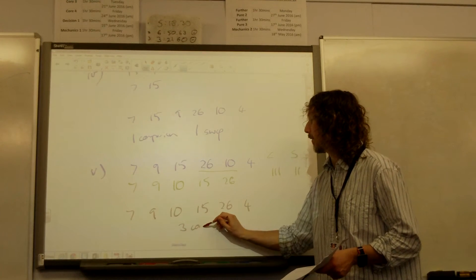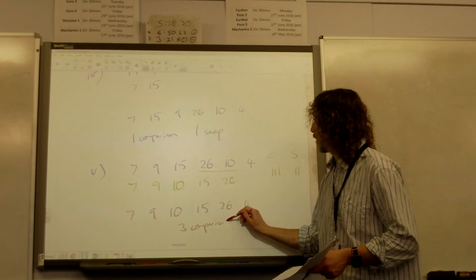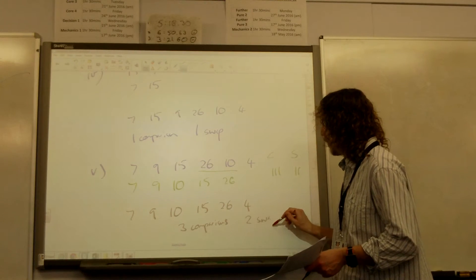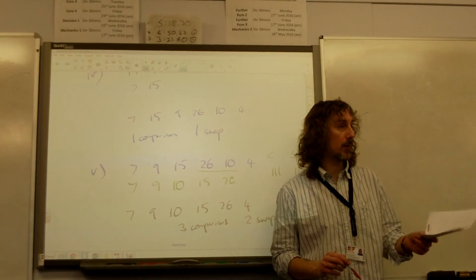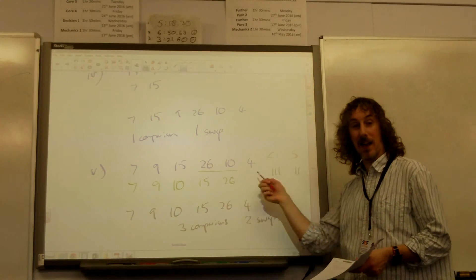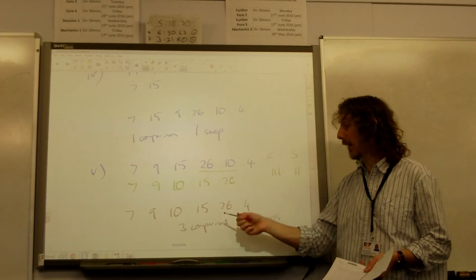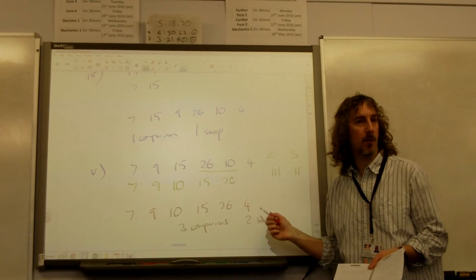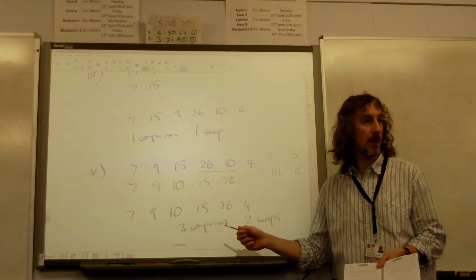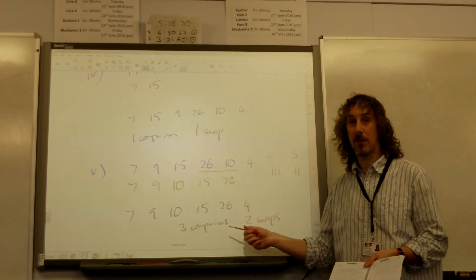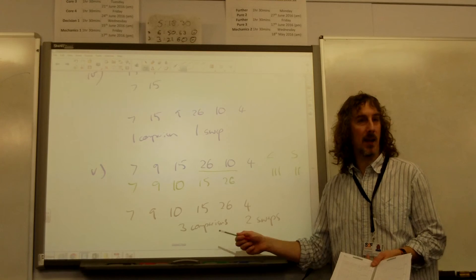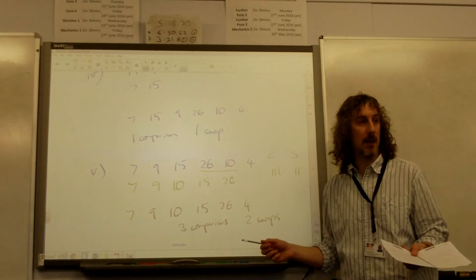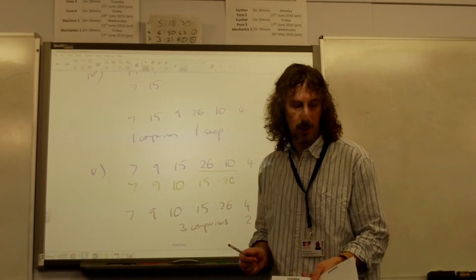And there were three comparisons and two swaps. I don't know if you've noticed, as I've been doing this, at every stage, even though I've done a little tally here, I've then written the number of comparisons and swaps. And that's important because they will not accept your number of comparisons and swaps as a tally. They will only accept it as a number. So if you did it as a tally, you didn't get the mark.